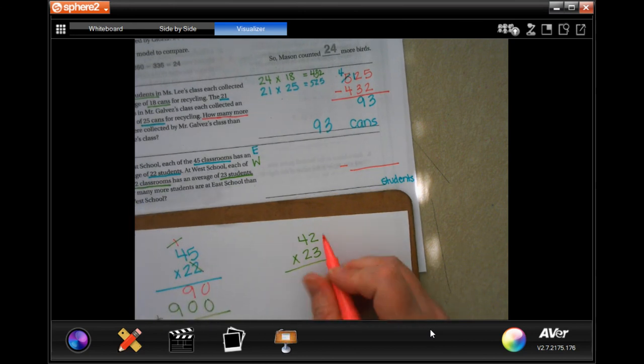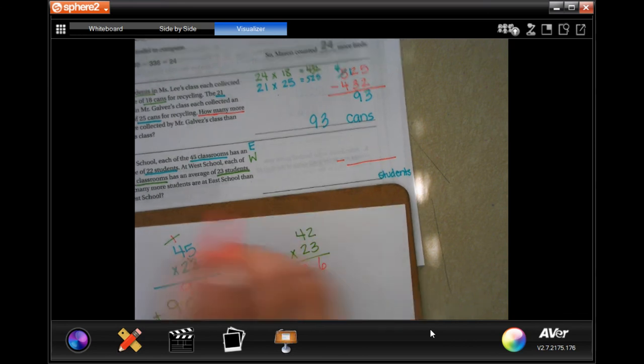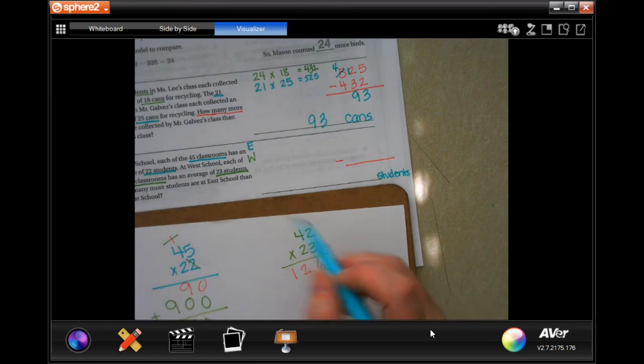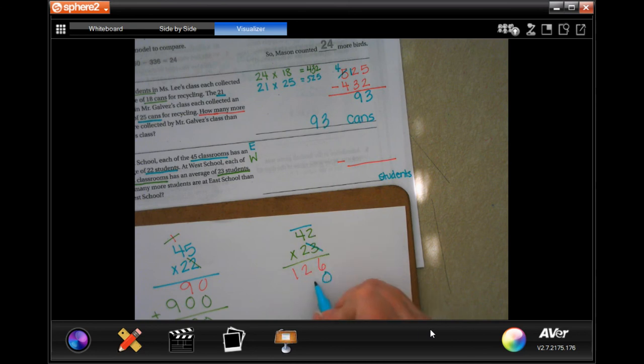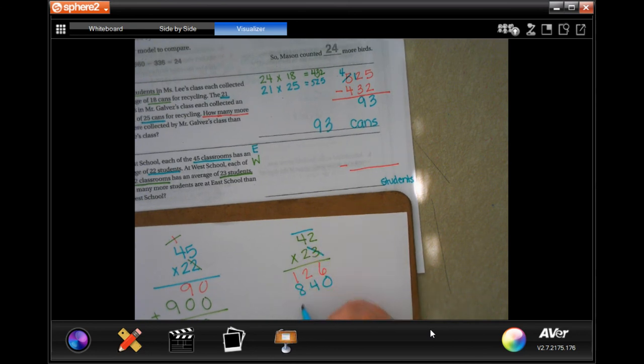So now, I'm going to do the other one. 3 times 2 is 6, nothing to carry. 3 times 4 is 12. Now, we're going to go through, and we don't have anything to tick, but that's fine. Tic-toe. 2 times 2 is 4. 2 times 4 is 8. Add them up. 6, 6, 9. So we have 990 minus 966.